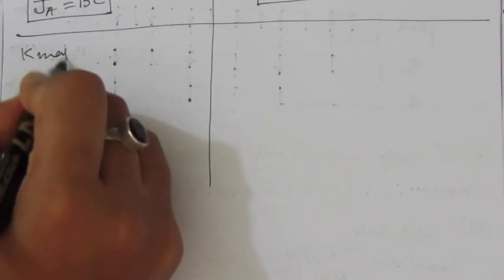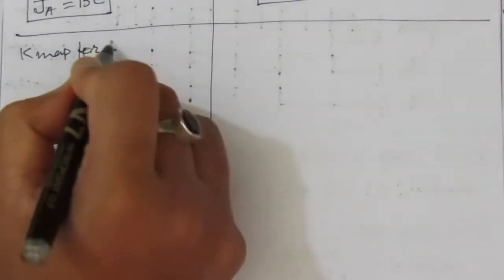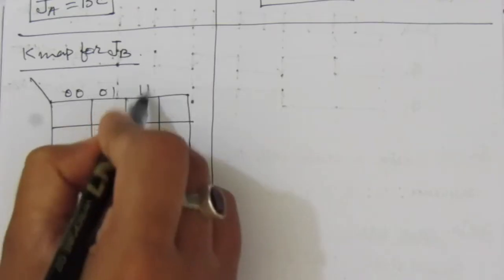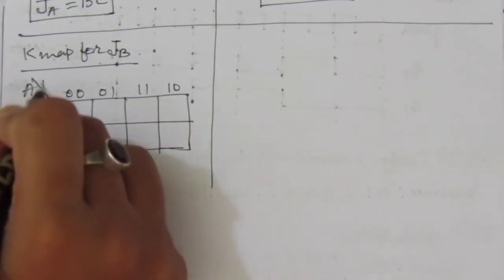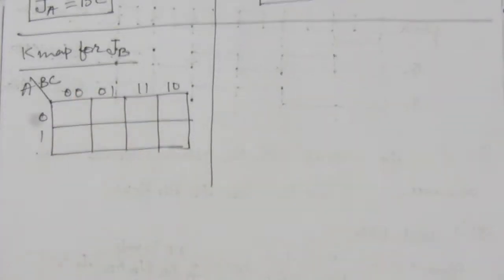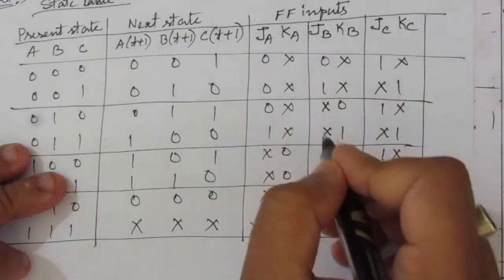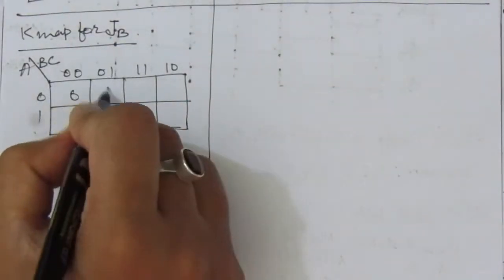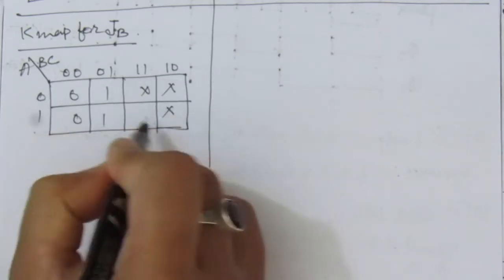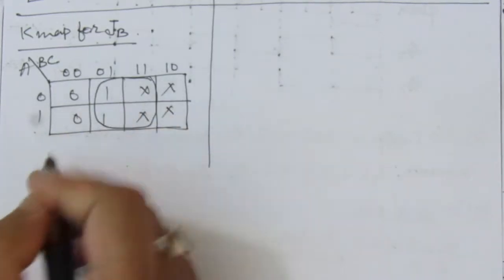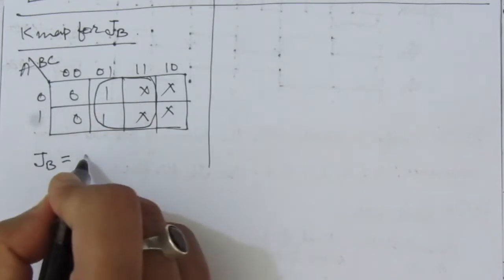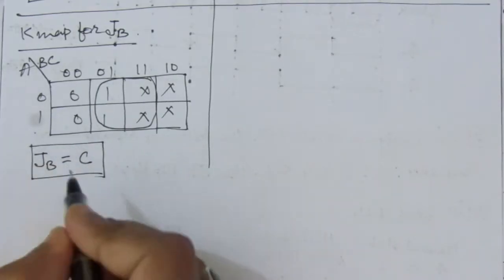Now let us find JB using a three-variable K-map. Placing the JB values — 0, 1, don't care, don't care, 0, 1, don't care, don't care — into the map, we get one combination. Therefore, JB = C. That means we directly connect the C output to the JB input.